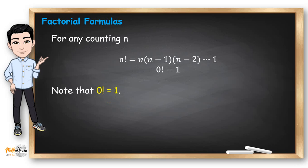In general, for any counting number n, n factorial means n times n minus 1 times n minus 2 until you reach 1. For example, if it's 3 factorial, it means 3 times 3 minus 1 times 3 minus 2. That's already 1 because 3 minus 1 is 2, and 3 minus 2 is 1.